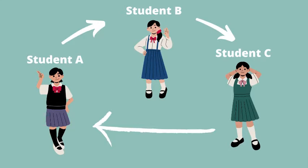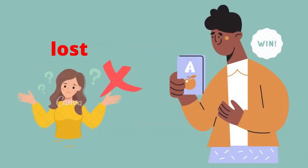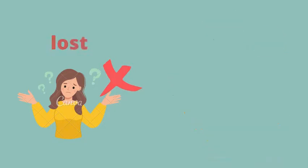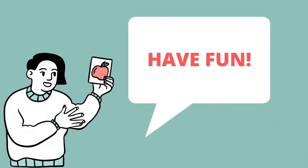Student B tries to remember what cards another student has. This continues for a few rounds. The player whose friends' cards are all guessed first loses, and whoever finishes guessing their friends' cards first wins.